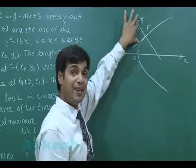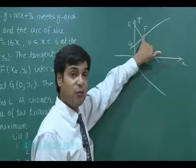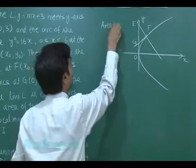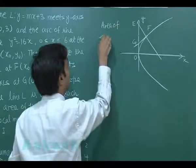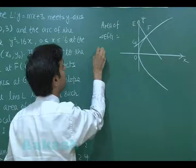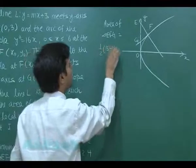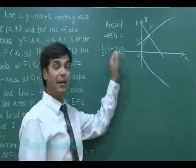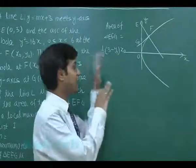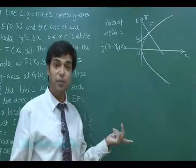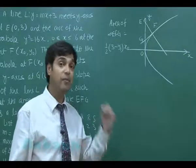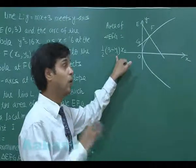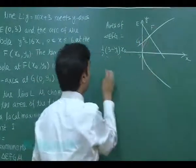E is at y=3 and G is at y=y₁, so the vertical length EG can be written as 3 minus y₁. The point F is at (x₀, y₀), so the base width is x₀. The area of triangle EFG is simply ½(3 − y₁)·x₀. If I express y₁ in terms of x₀ alone, I can differentiate to find the maximum. So let's find y₁ in terms of x₀.